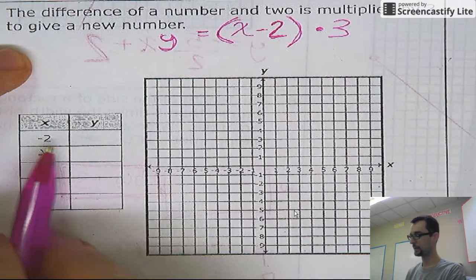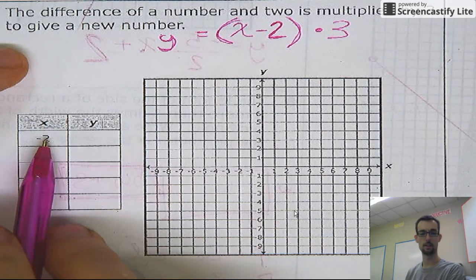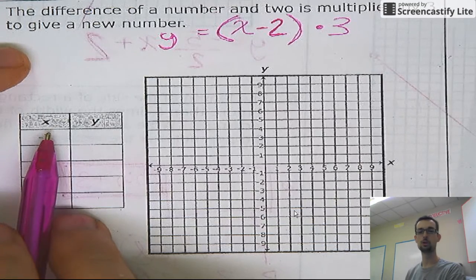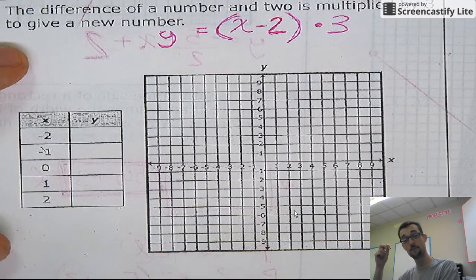Okay, let's try it out. Let's pick out the number negative two. And I got this little fly buzzing around. You can probably see them on the screen here. Driving me nuts. All right, negative two. I'm going to subtract two. So negative two minus two is negative four.